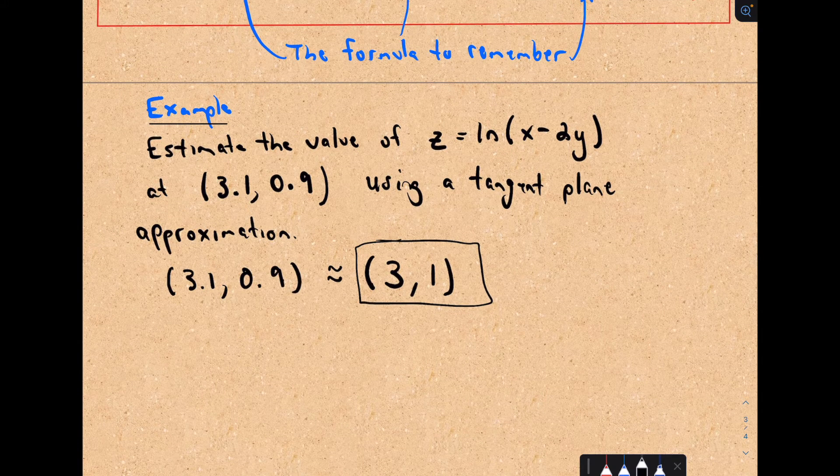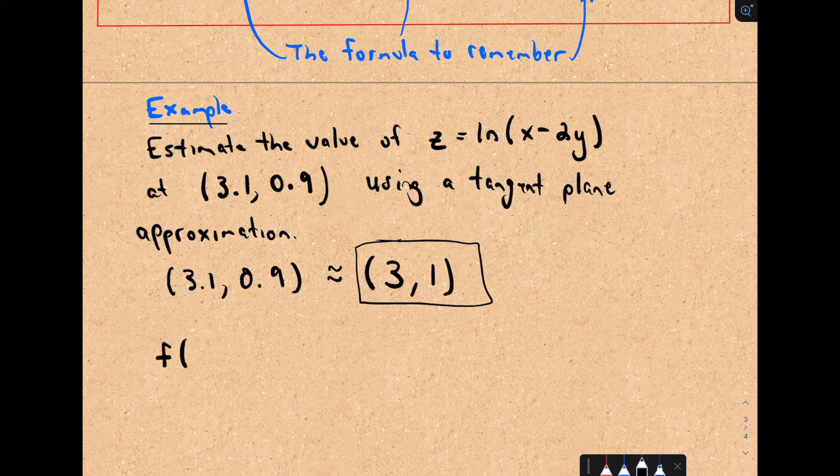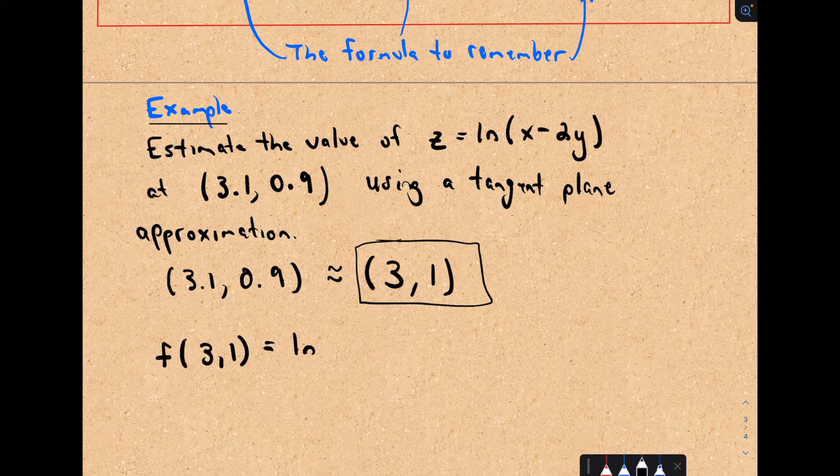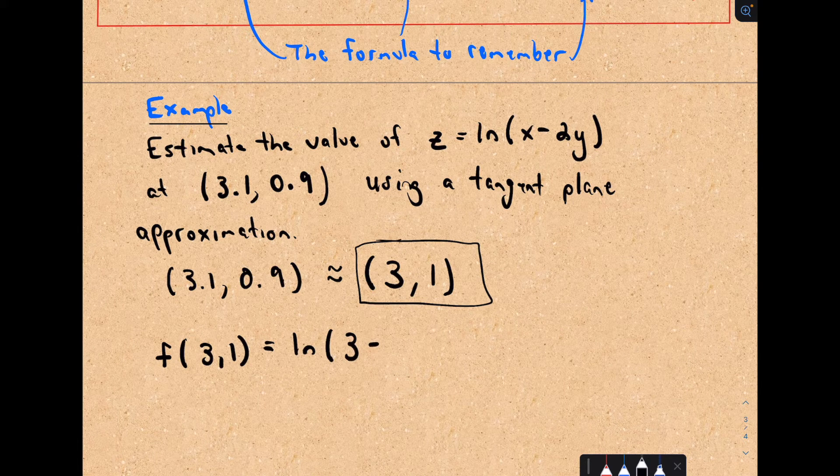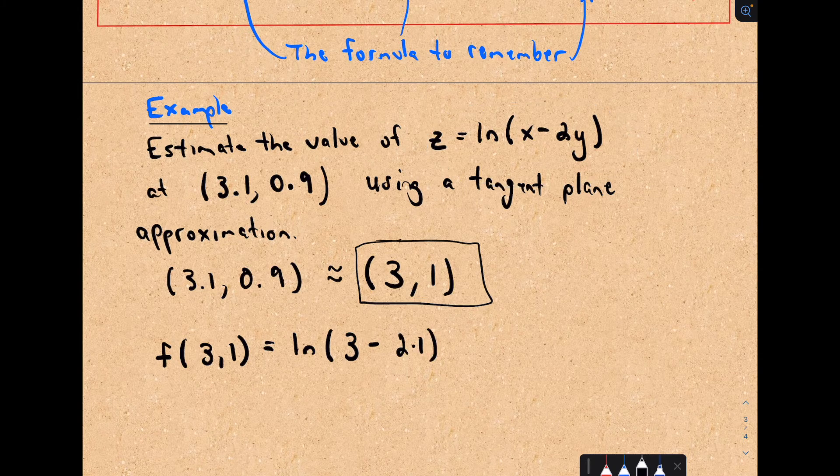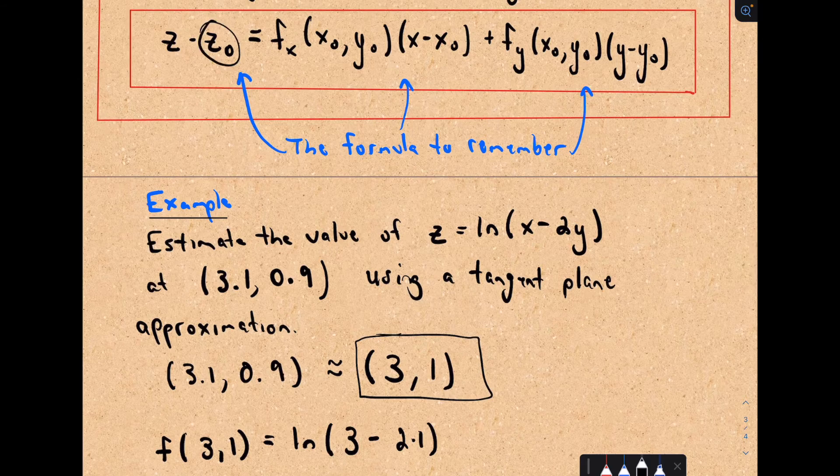And notice, if we evaluate our function, so our function, if we plug in 3 and we plug in 1, we would have the natural logarithm of 3 minus 2 times 1. So I'm just plugging it in here because we do need that z coordinate as well.